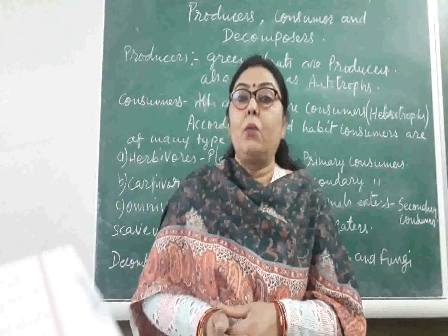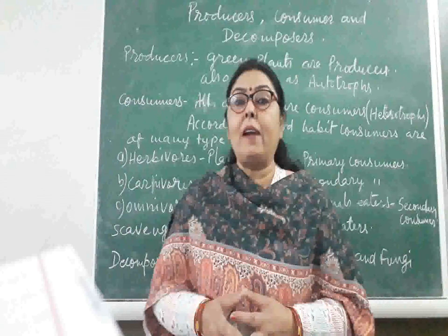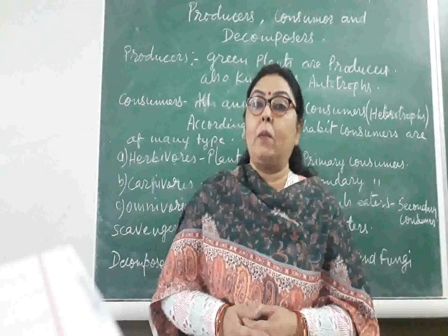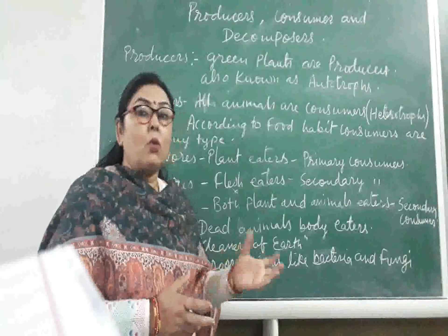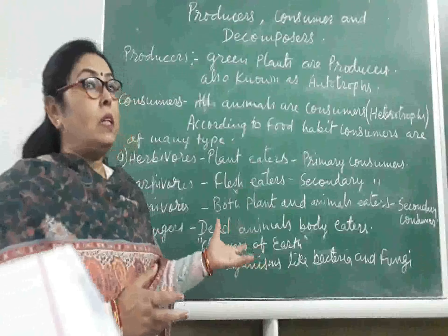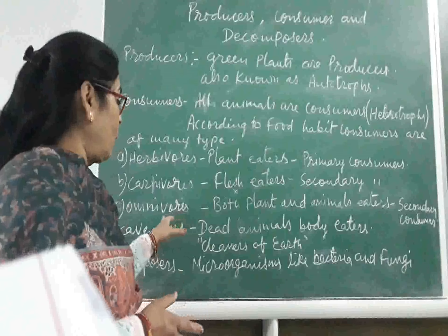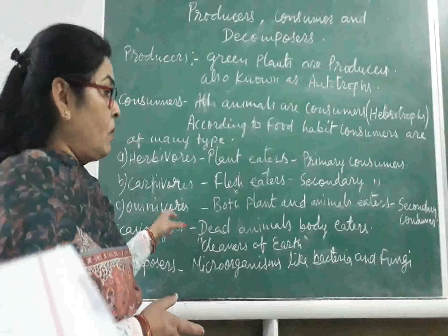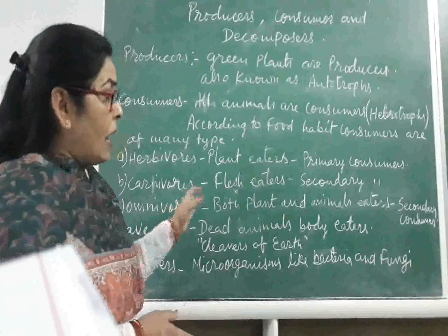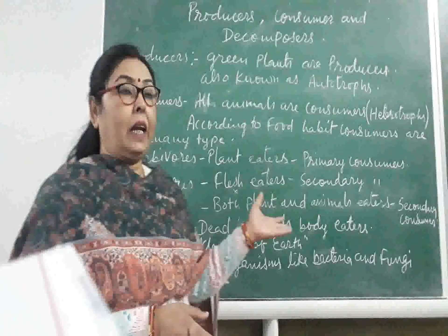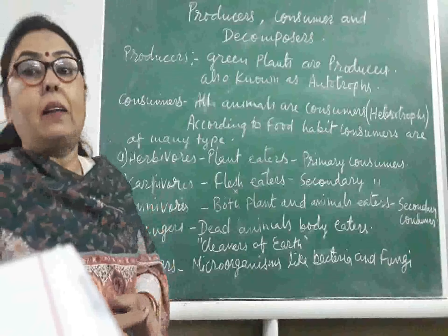Third is omnivores, like human beings. We eat food that we get from both plants and animals. Because we take our food from both, we are called omnivores. Omnivores are also included in secondary consumers.